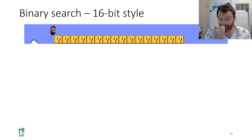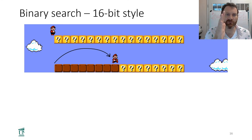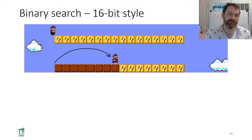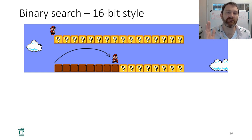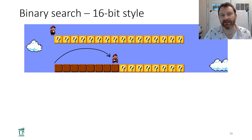In binary search, Mario employs a slightly different strategy. Instead of going block by block, he's going to take advantage of the list itself to get more information about where the mushroom might be. So what he will do is jump to the middle first. When he gets to the middle, he finds out that the mushroom is not in that block or to the left — the list gives him that information.